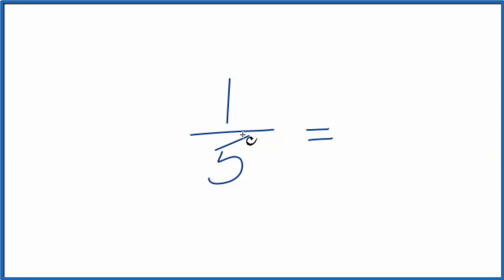So to start with, we could multiply this by one, but instead of one, let's multiply it by two over two. Two divided by two is still one, so we're not changing anything, just the way it's written.